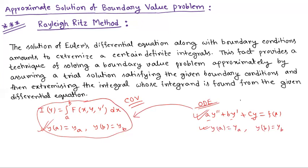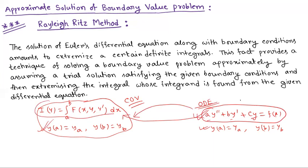If anyhow we can change this boundary value problem into a functional I(y) = integration from A to B of f(x, y, y') dx — if we can change this ordinary differential equation into a functional — then we can solve this problem using calculus of variation. And here is the Rayleigh-Ritz method. This is the main idea of the Rayleigh-Ritz method.